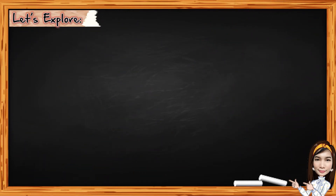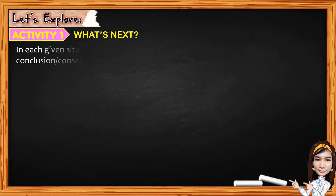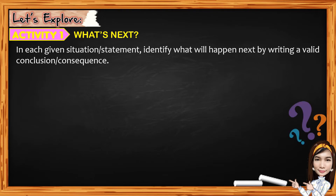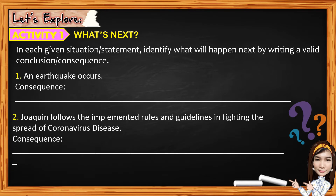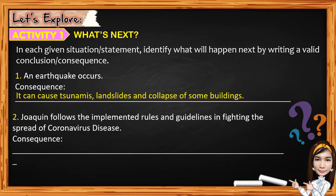Now let's explore. For Activity 1, what's next? In each given situation or statement, identify what will happen next by writing a valid conclusion or consequence. For number 1, an earthquake occurs. What do you think will happen next? The answer is, it can cause tsunamis, landslides, and collapse of some buildings.